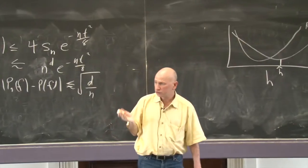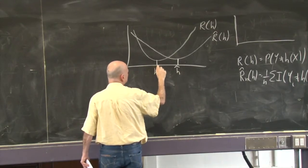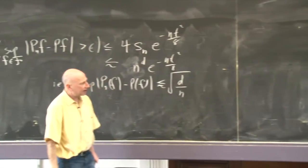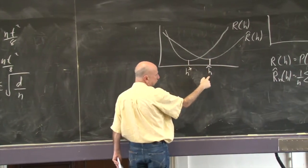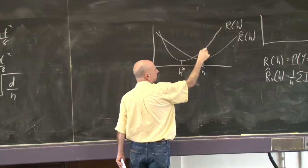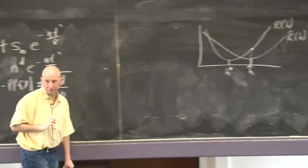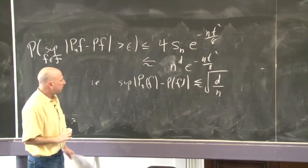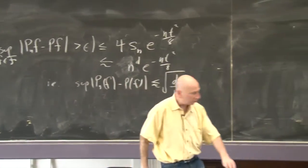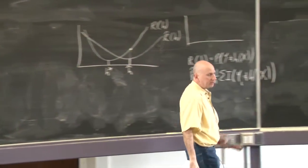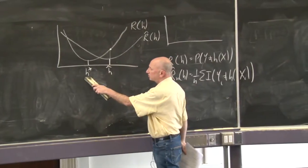If some oracle told you the true risk, you could instead find the one that minimizes that - let's call it h star. The question is: can I guarantee that I haven't screwed up too much, that this thing has a pretty small true risk? What's the true risk of the classifier I selected? I want to make sure this gap is not too big. It turns out these can't be too big, thanks to this concentration result, and the proof is now like a one-line proof. With finite VC dimension, the true risk of the chosen classifier is pretty close to the risk of the oracle.